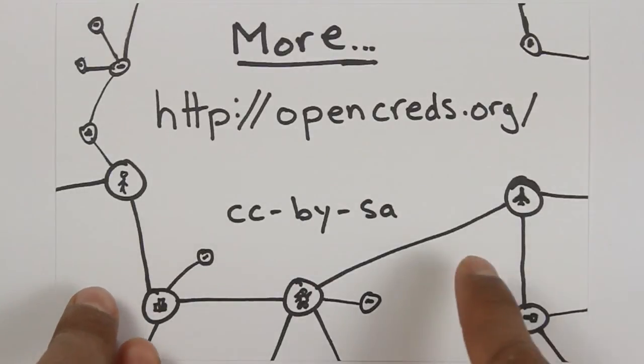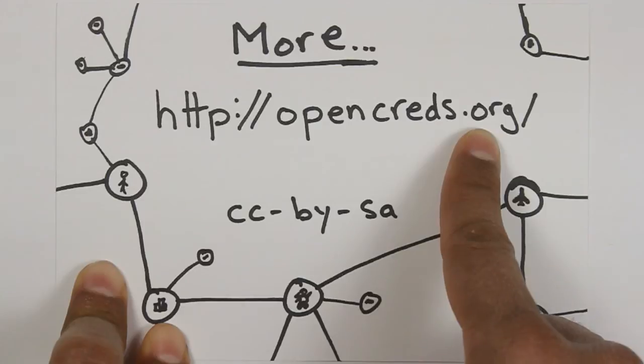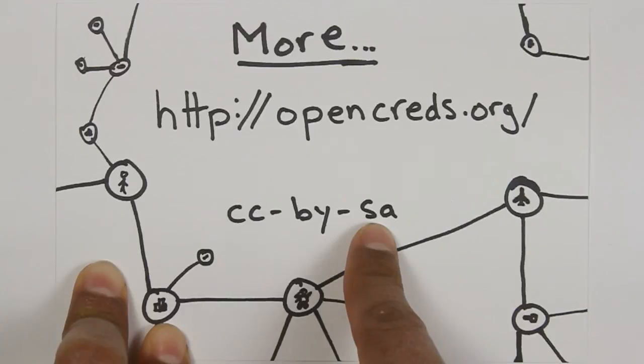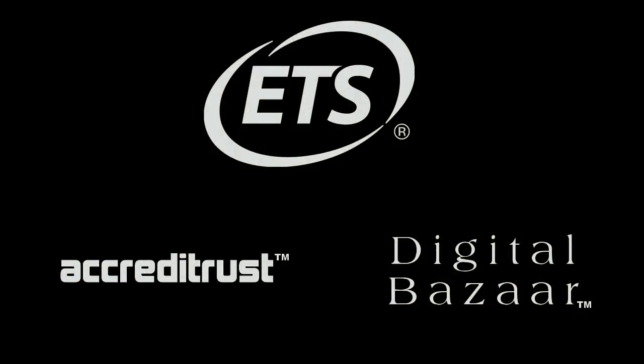If you found any of the information in this video of interest, you can go to the opencreds.org website. That's where a lot of this technology is being worked on. We have weekly calls that you're more than welcome to join. This entire presentation is shared under a Creative Commons Attribution Share-Alike license. That means you can share it with your friends and colleagues whenever you'd like to. This video was made possible by contributions from Educational Testing Service, Accredit Trust, and Digital Bazaar. The video is copyright 2015 by Educational Testing Service and is provided under a Creative Commons Attribution Share-Alike 4.0 license. This means you are free to share and modify the content in this video as long as Educational Testing Service is attributed and the same license is used for any derivative works.